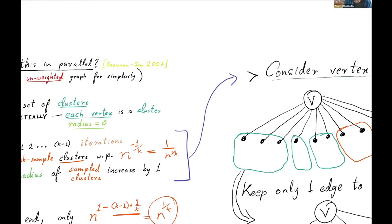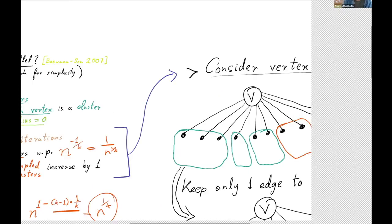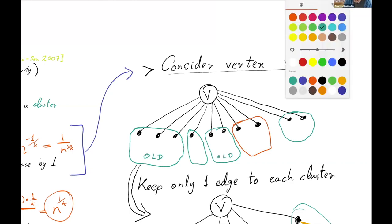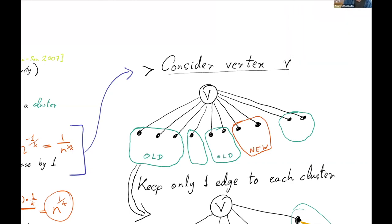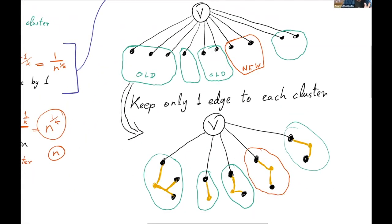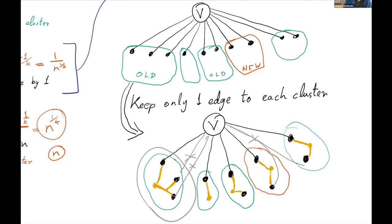Let's focus on the subsampling and growth phases. Subsampling is simple — you just take a subsample of vertices with some probability. More interesting is the growth. Instead of looking at growth from the viewpoint of clusters, we'll look at it from the viewpoint of a vertex V. Vertex V is adjacent to a bunch of old clusters and potentially one new cluster marked in red. We start by removing all duplicate edges to a cluster — if V is adjacent to a green cluster with multiple edges, we keep only one of them.